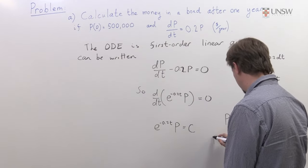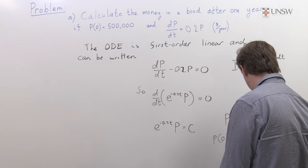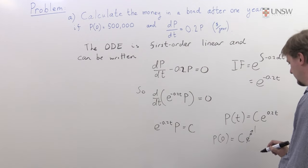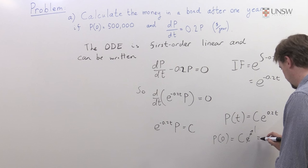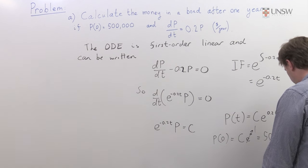If we look at P at 0, that will be equal to C times e to the 0. The exponential of 0 is just 1, so this is just going to be equal to P0, which was half a million.